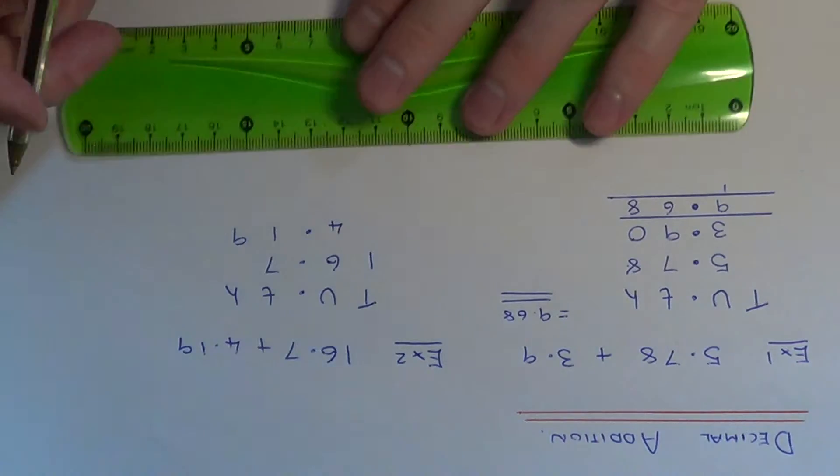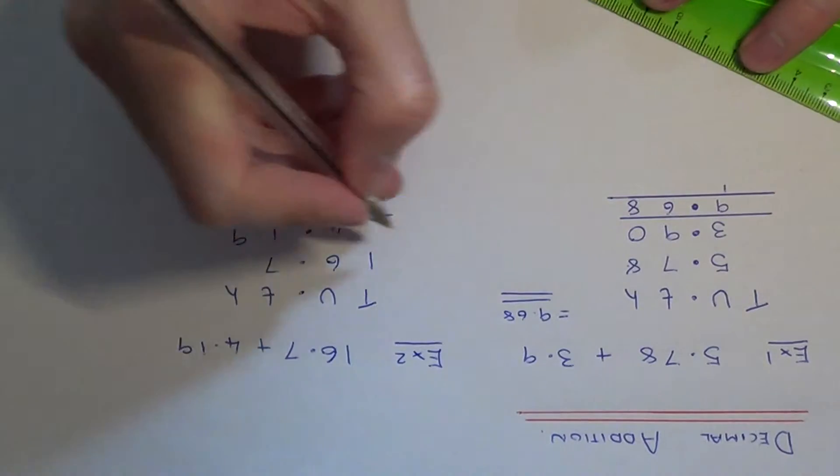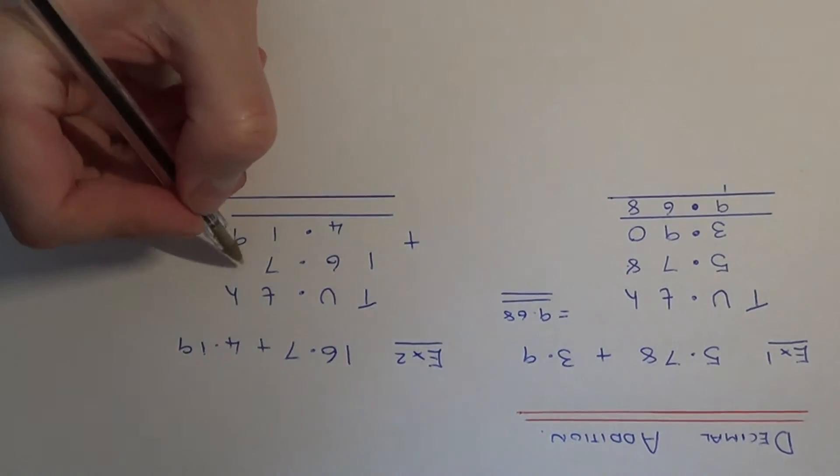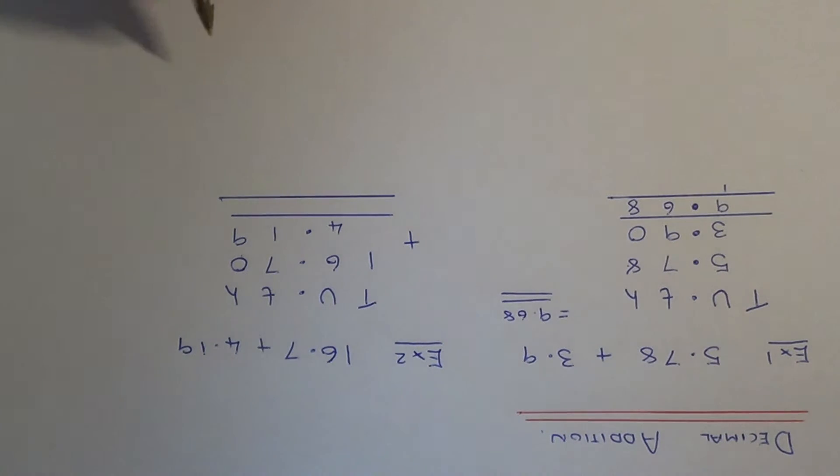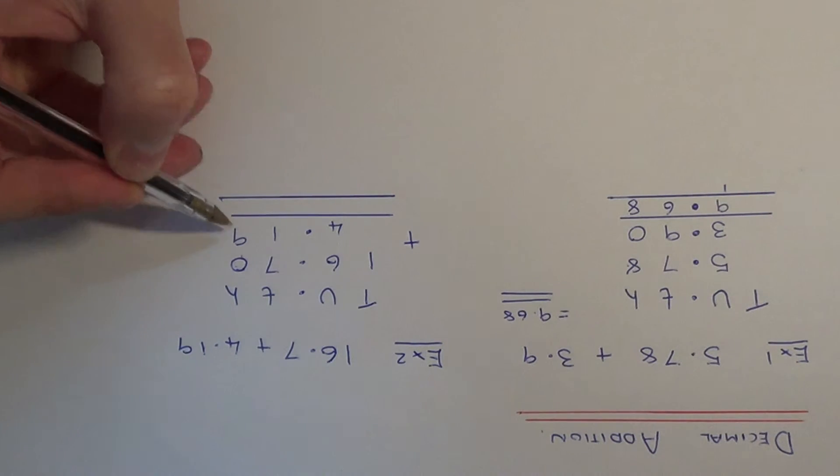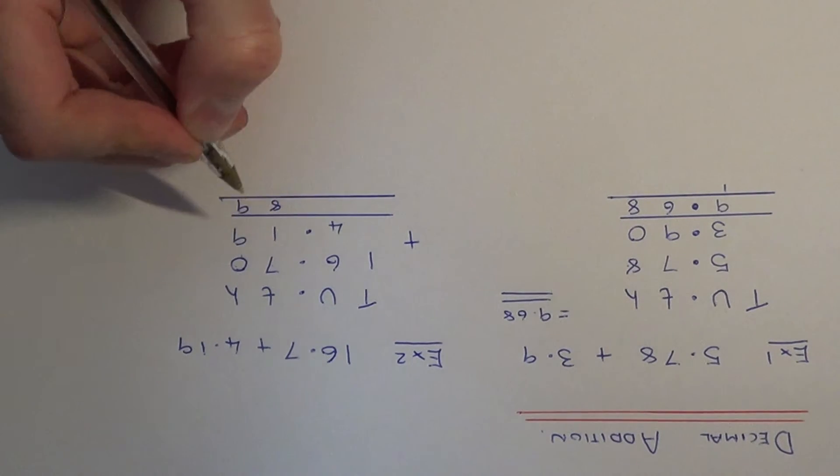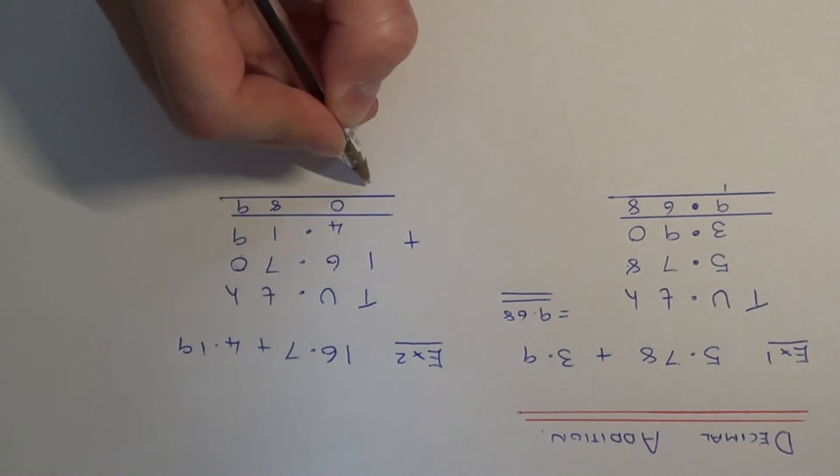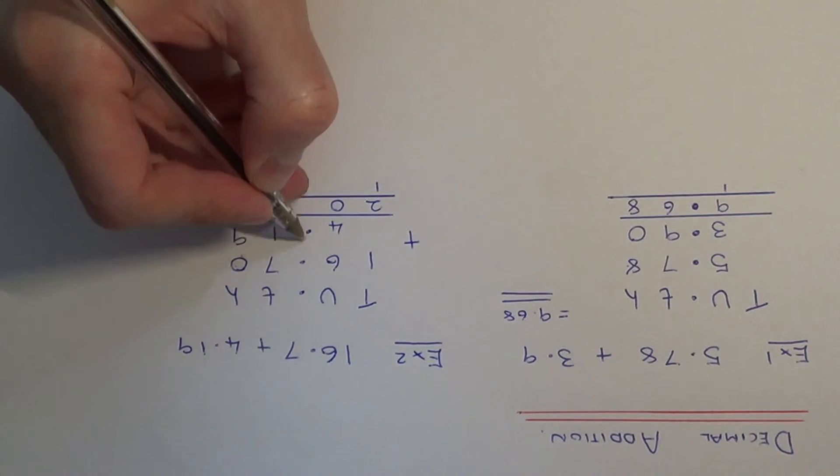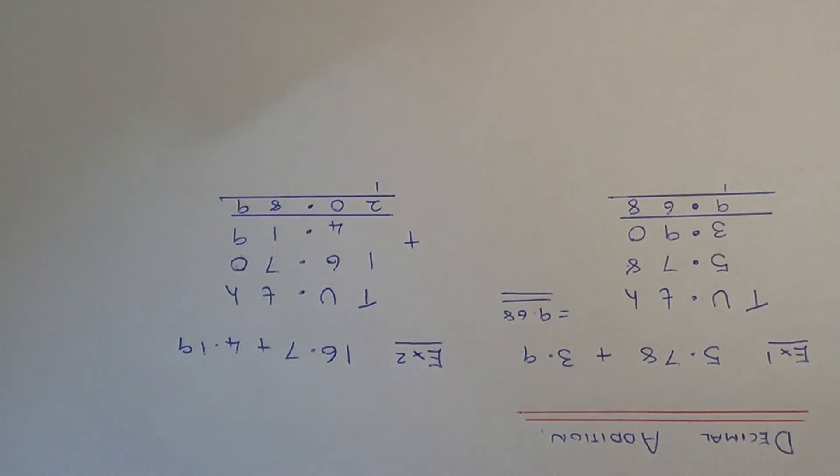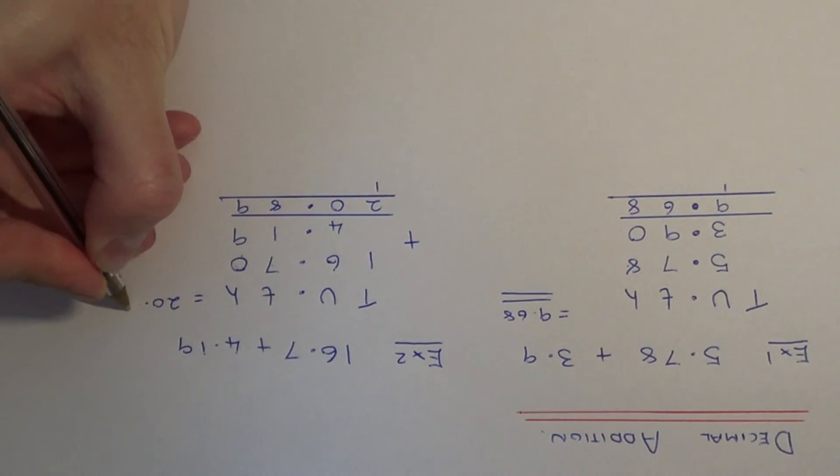Again, we just need to add together the columns. You might want to fill a zero in the hundredths column for the top number. 0 add 9 is 9, 7 add 1 is 8, 6 add 4 is 10, 1 add 1 is 2. Keep the decimal points in line in your answer. The final answer is 20.89.